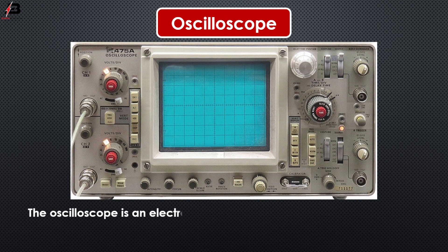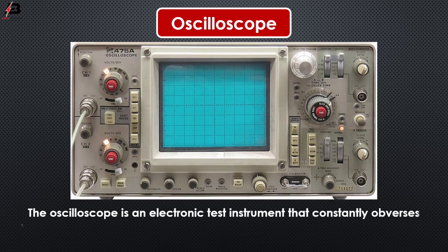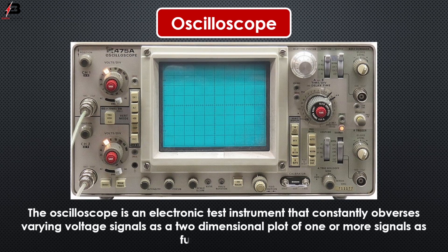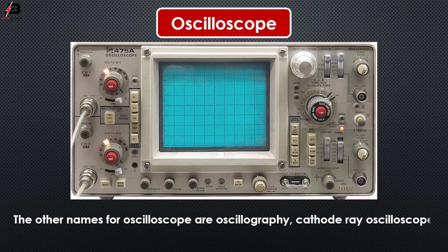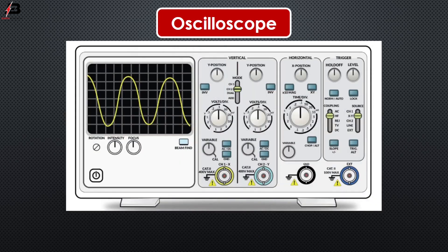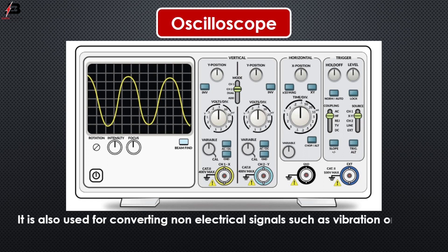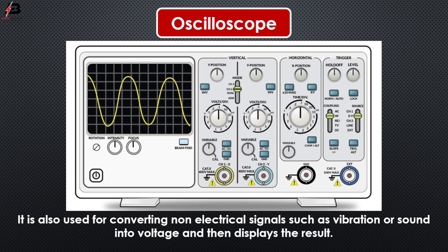Oscilloscope: The oscilloscope is an electronic testing instrument that constantly observes varying voltage signals as a two-dimensional plot of one or more signals as a function of time. Other names for the oscilloscope are oscillograph, cathode ray oscilloscope, or digital storage oscilloscope. It is also used for converting non-electrical signals such as vibration or sound into voltage and then displays the result.